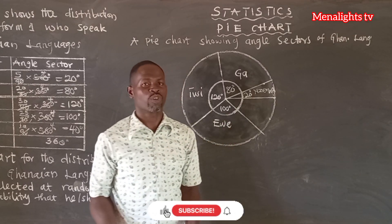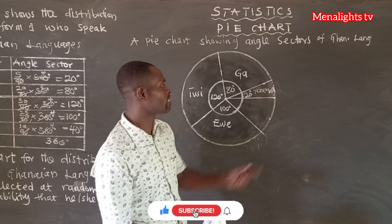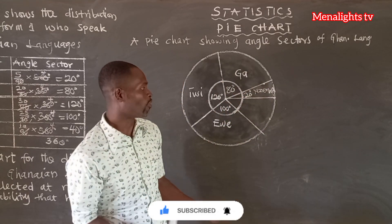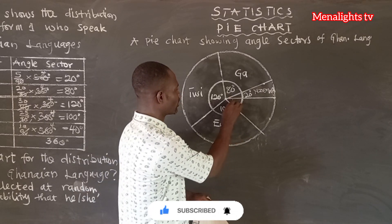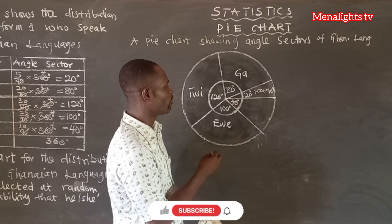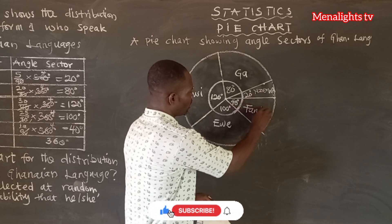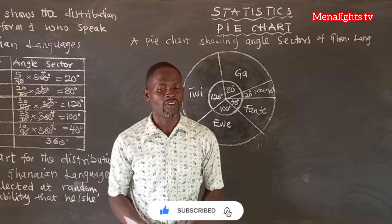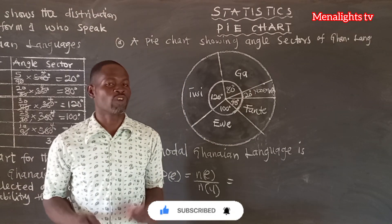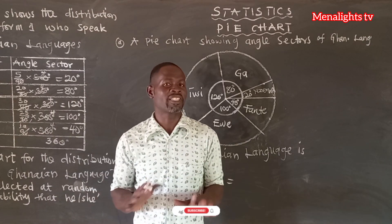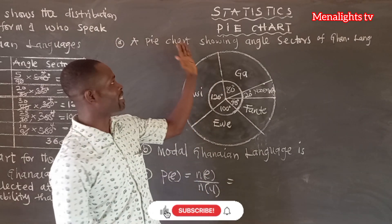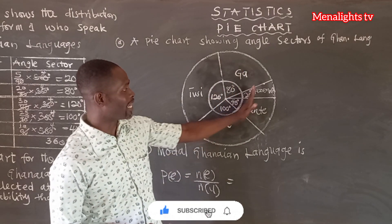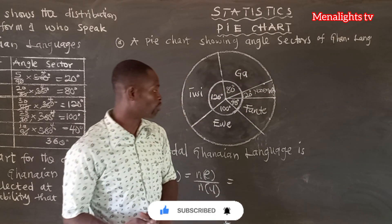The last one is Fanti, which is 40 degrees. Since all the calculations are accurate, the last sector has to be exactly 40 degrees, so there's no need to measure it — the remaining space is our 40 degrees for Fanti. Every diagram needs a title, so we write: 'Pie chart showing the angle sector of Ghanaian languages that students speak.'